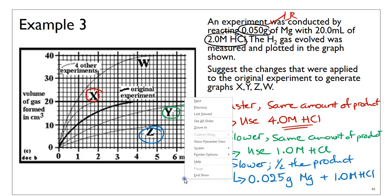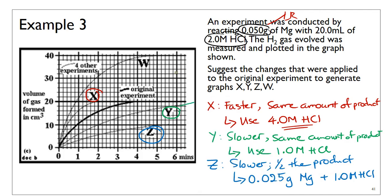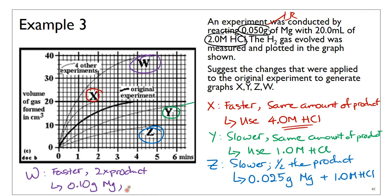Graph W is the opposite of Z — a faster reaction with double the amount of product. So we use 0.10 grams of magnesium and double the concentration of HCl. The key takeaway for example three is distinguishing between changes that only increase the rate of reaction versus changes that also increase the amount of product.